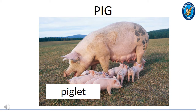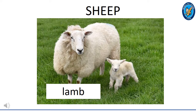Can you see this pig? The young one of a pig is called a piglet. How many piglets can you see on the screen? Let's count together: one, two, three, four, five, six, seven, eight. There are eight piglets on the screen.